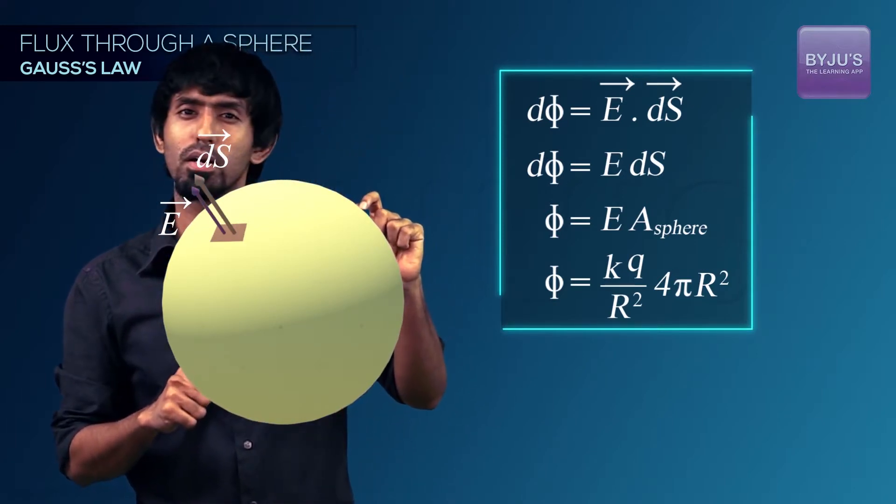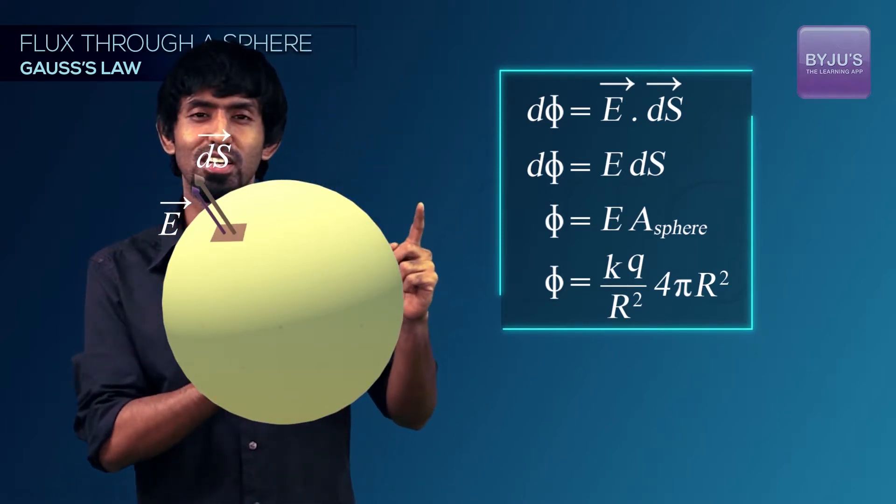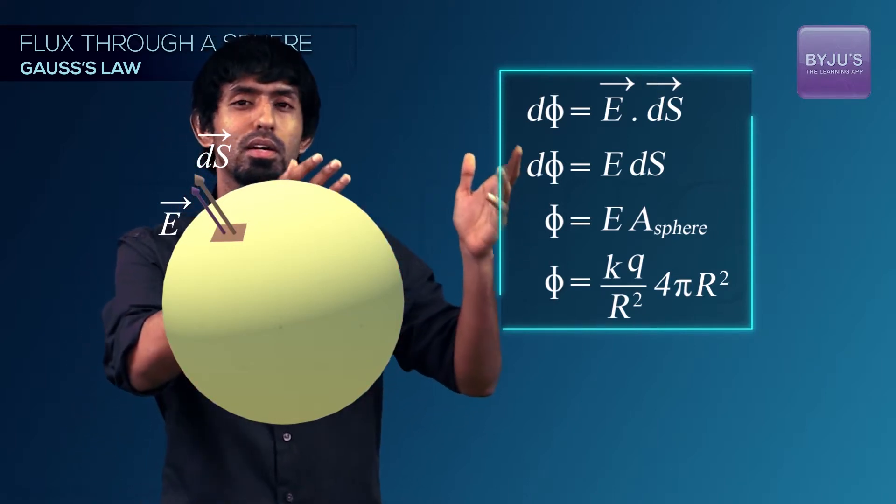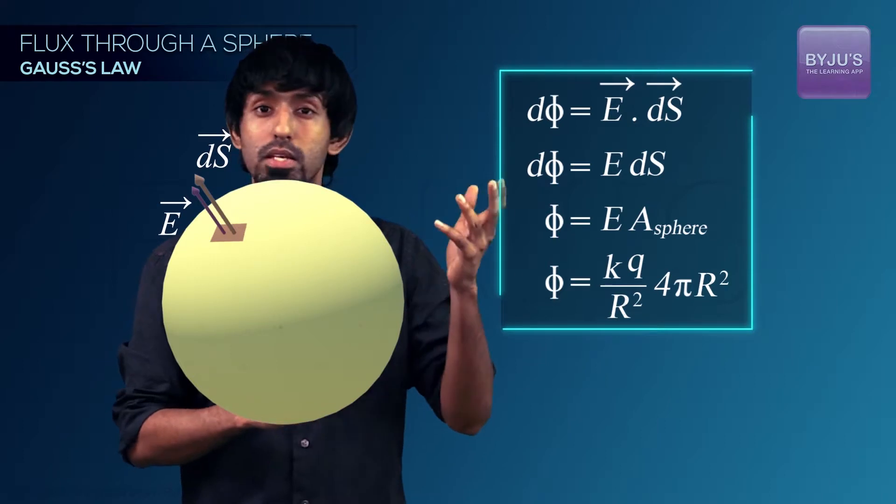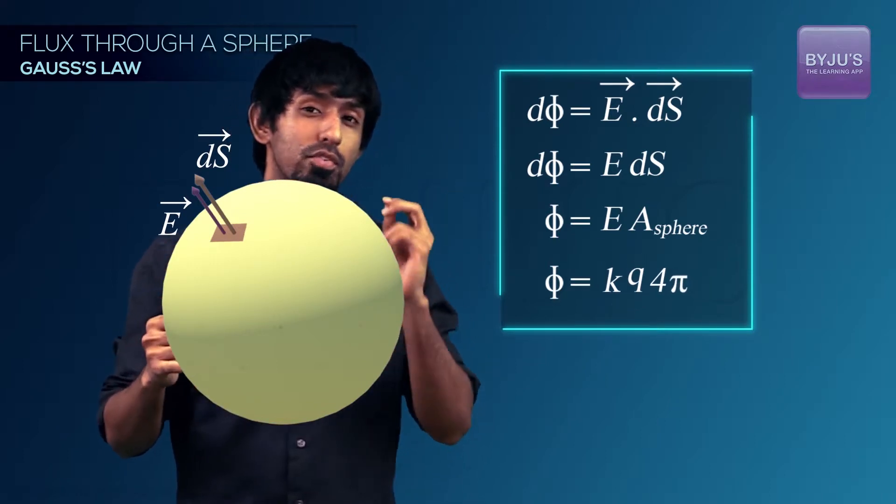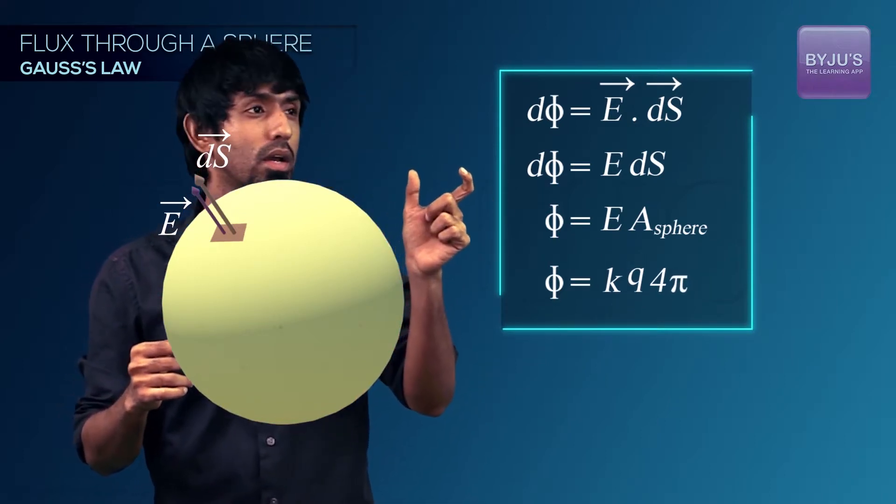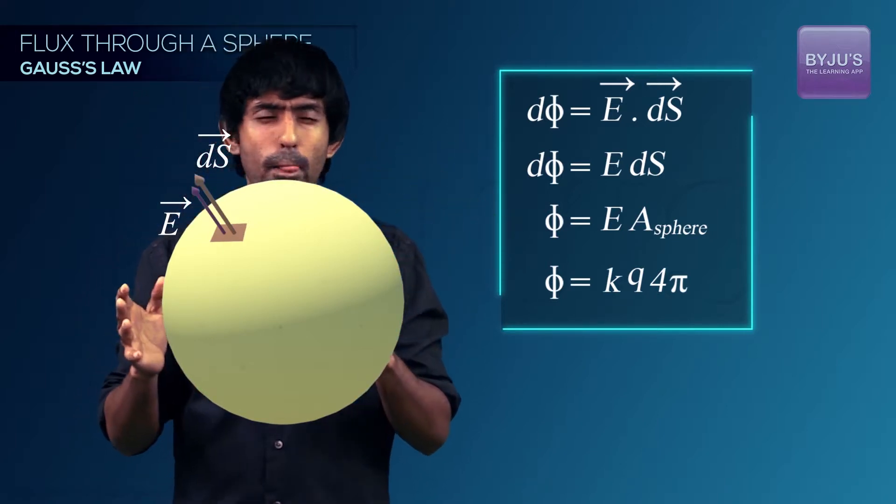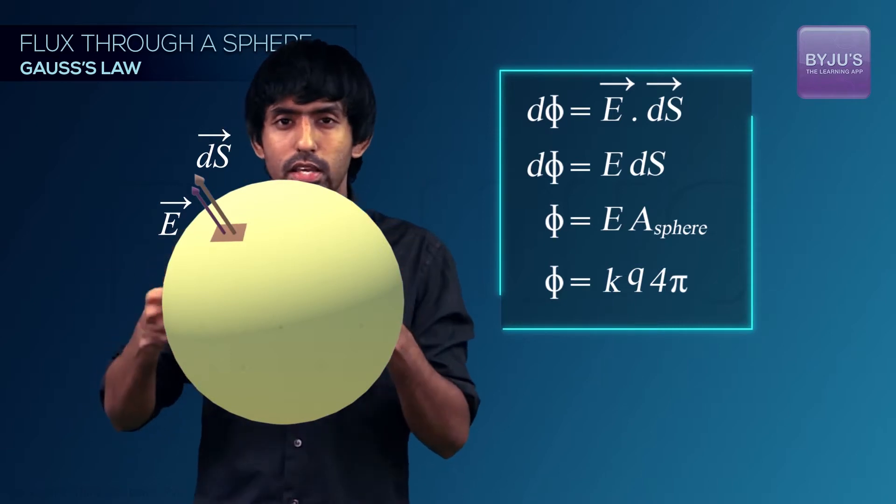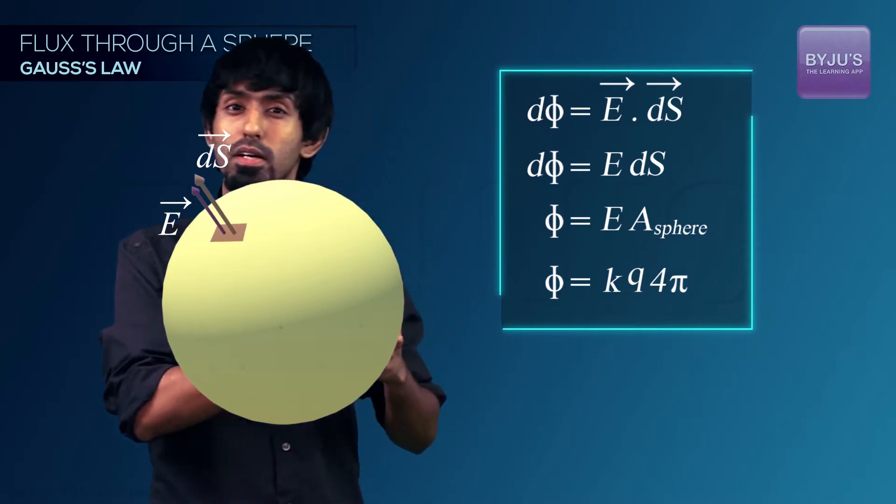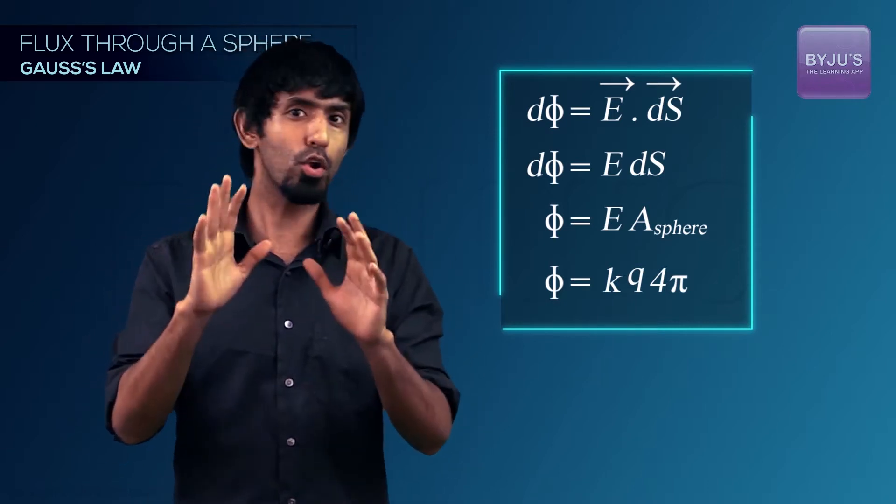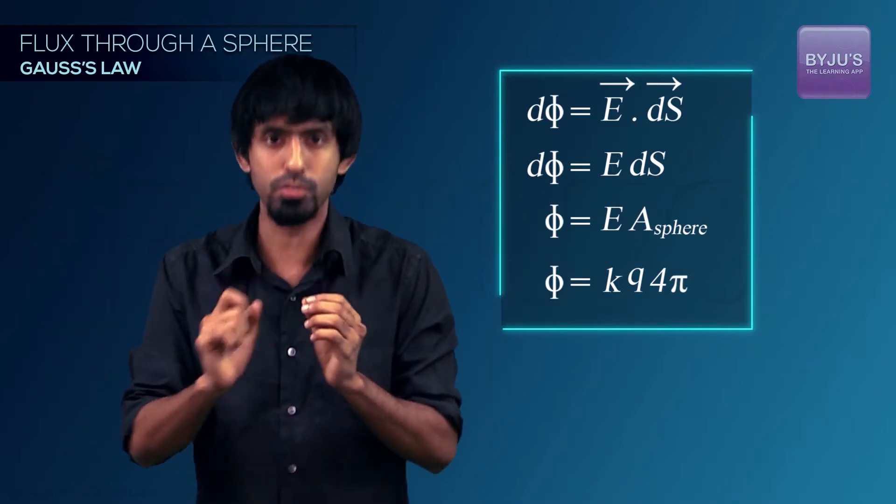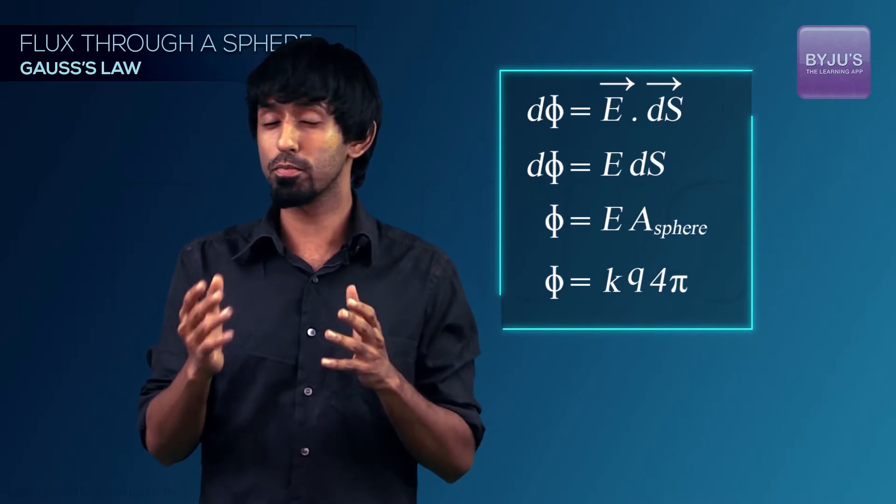Now observe something. Have you already observed it? What is that? Some very important variable is going away. What's going away? The radius of the sphere is going away. So you have K Q into 4 pi as your answer. K Q into 4 pi has nothing to do with your radius of the sphere, which means that whatever radius you've taken, you've got the same answer.